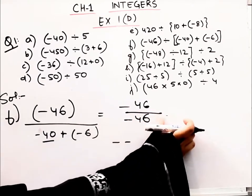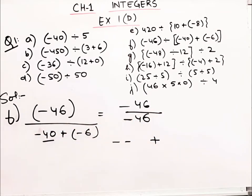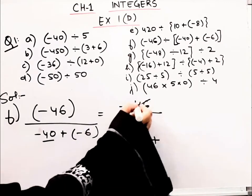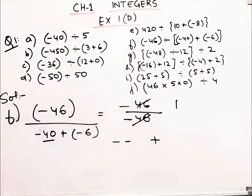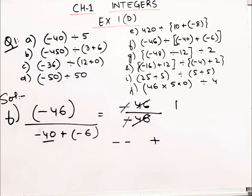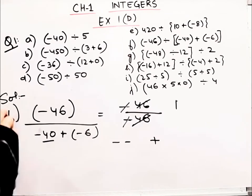And whose sign will come? The number that is bigger. 40 is bigger, 40 has negative sign. So minus 40 plus 6, minus becomes plus. 40 plus 6, how much will it be? 46. Now see, 46 is equal to 46, one time. And minus divided by minus is plus. They will cancel out. So how much will the answer be? Plus 1. The negative signs will cancel. Clear?